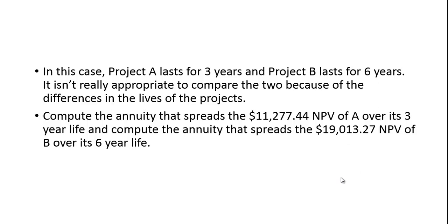One way we can deal with this problem is to spread the NPV of project A over its three-year lifespan and take the NPV of project B and spread it over its six-year lifespan. So even though project B has a much higher NPV, it's spread over more years, while project A has a smaller NPV but it's spread over only three years as opposed to six.